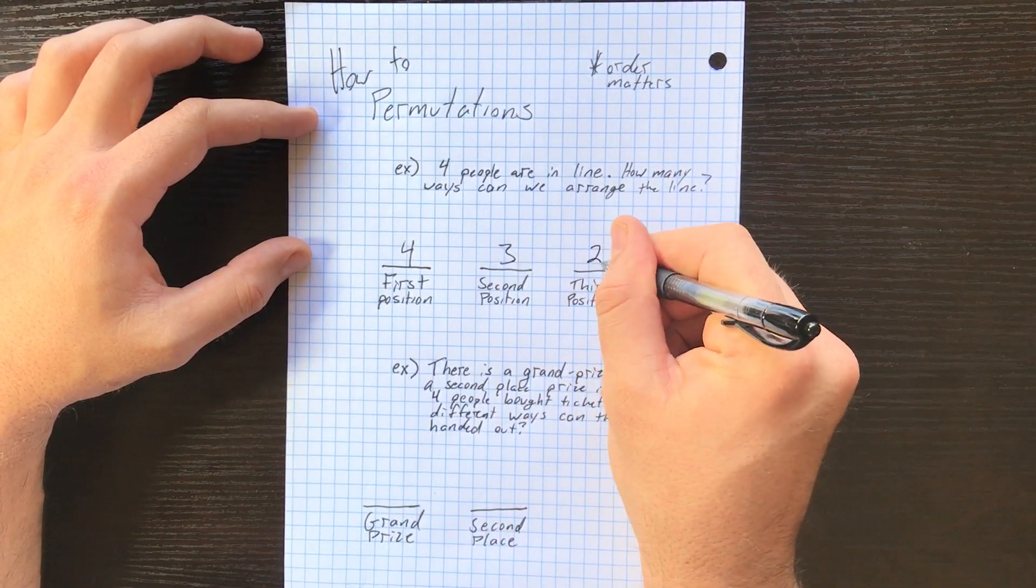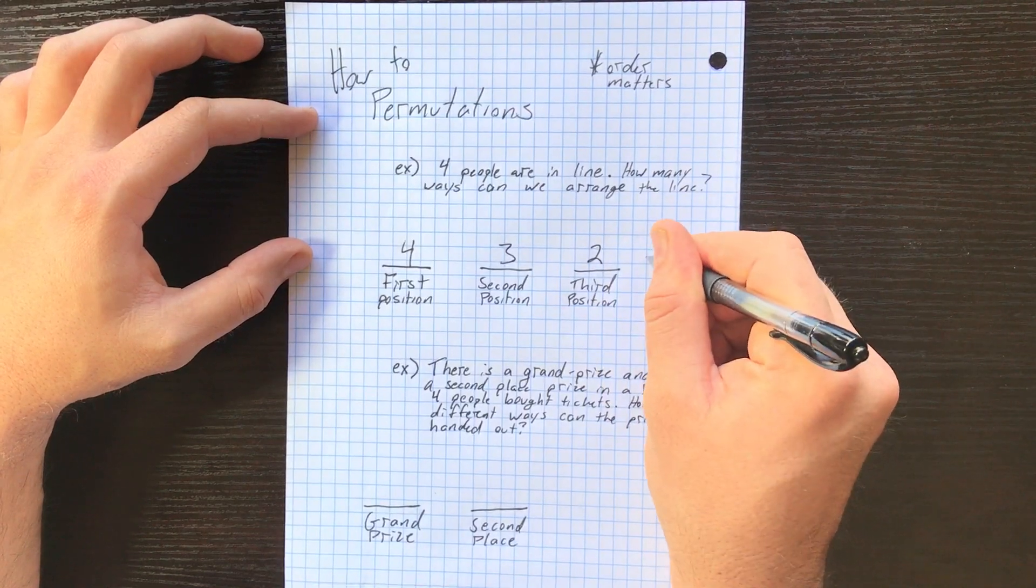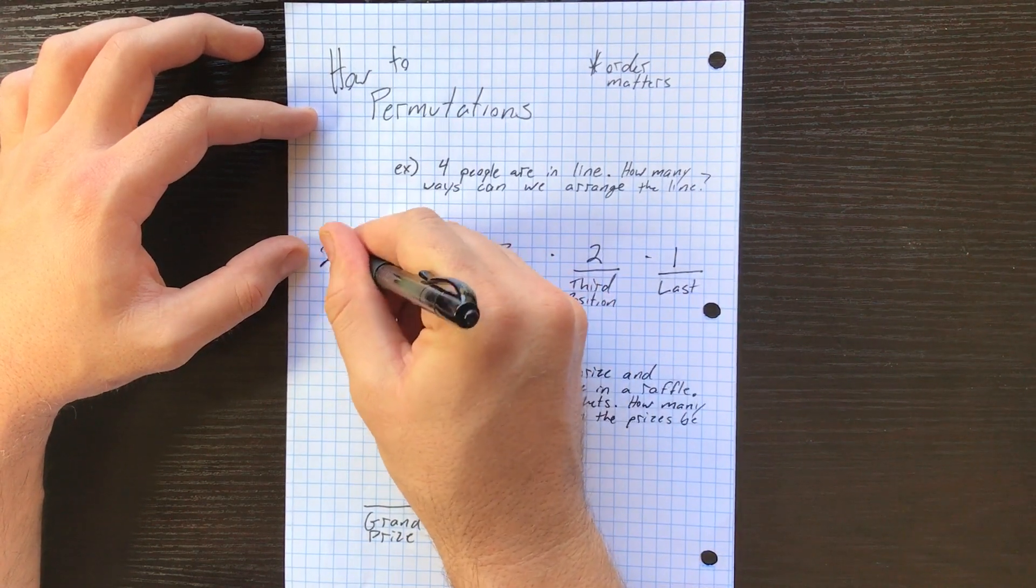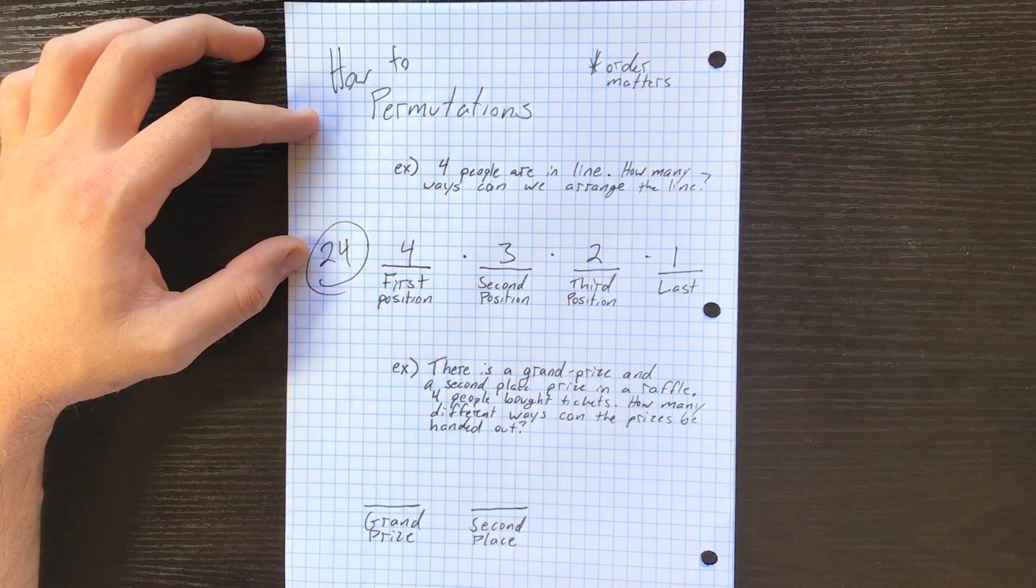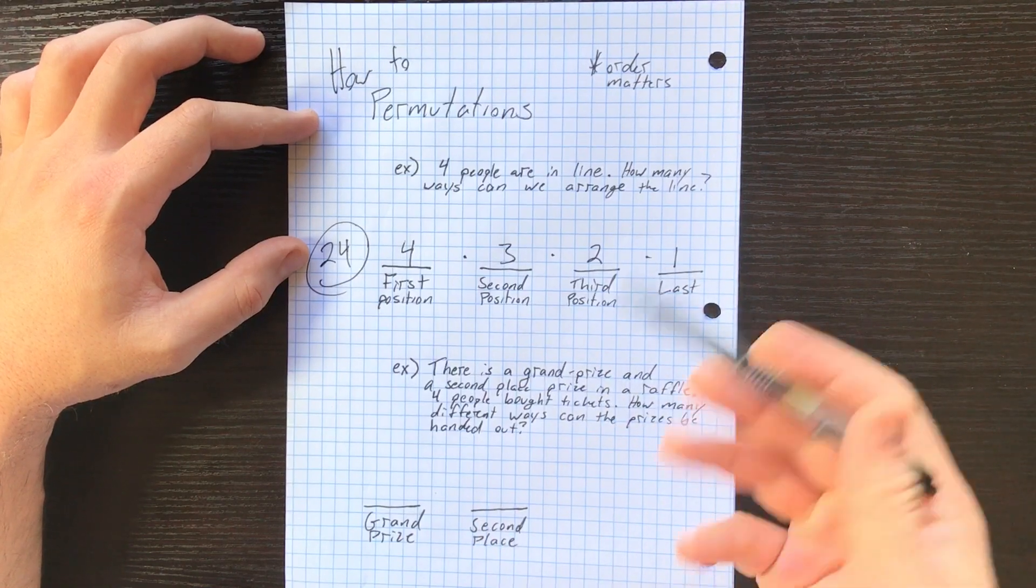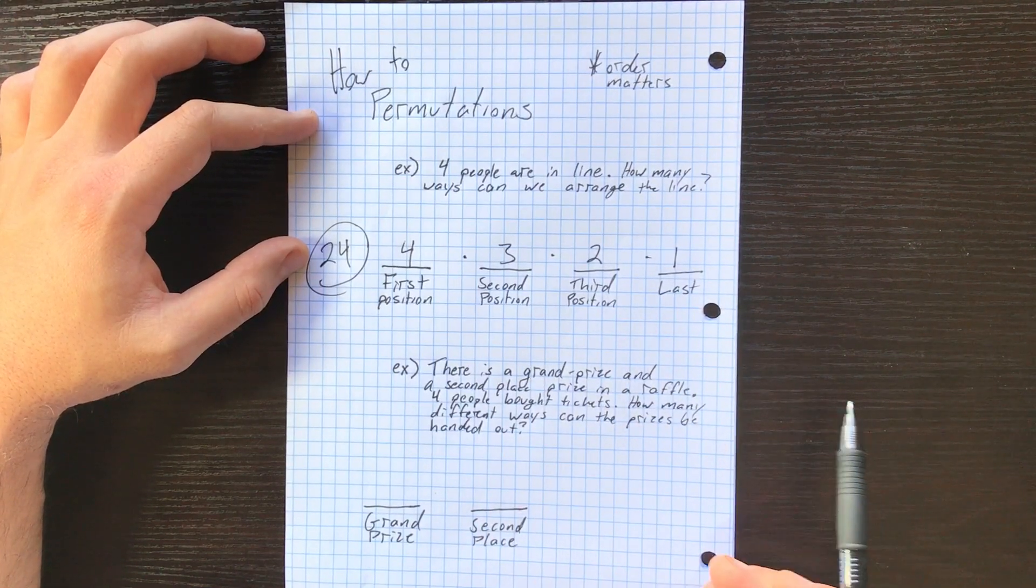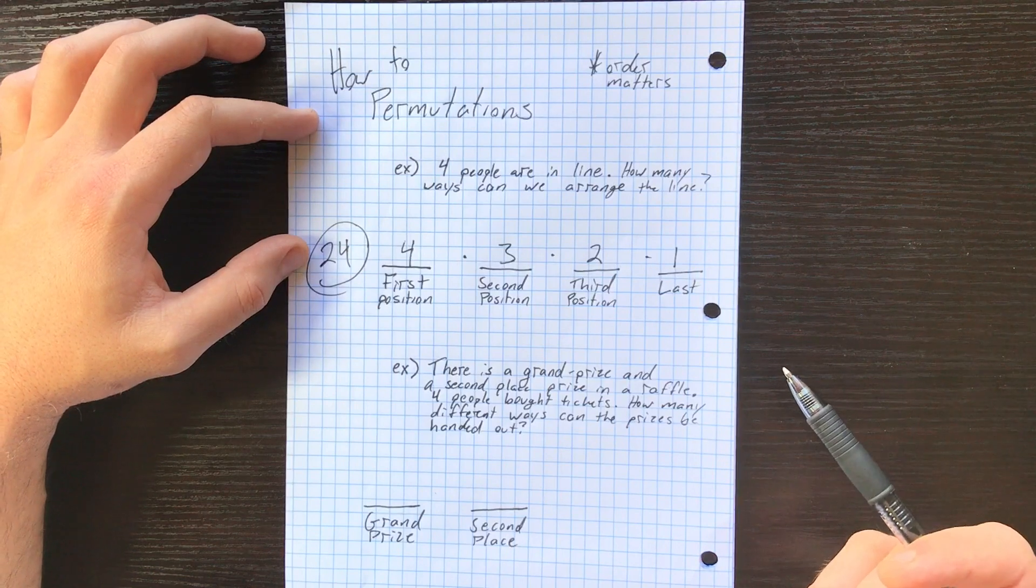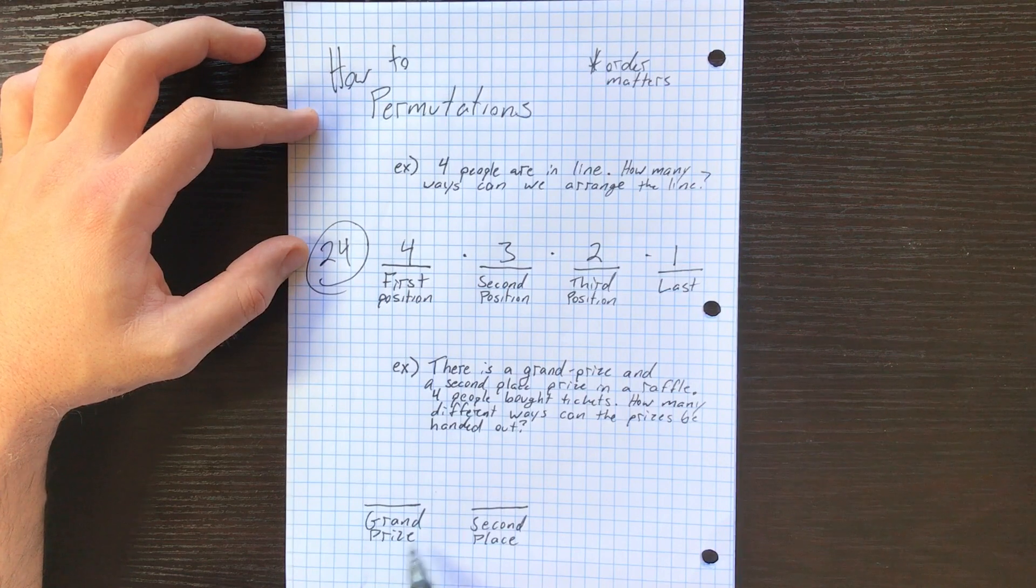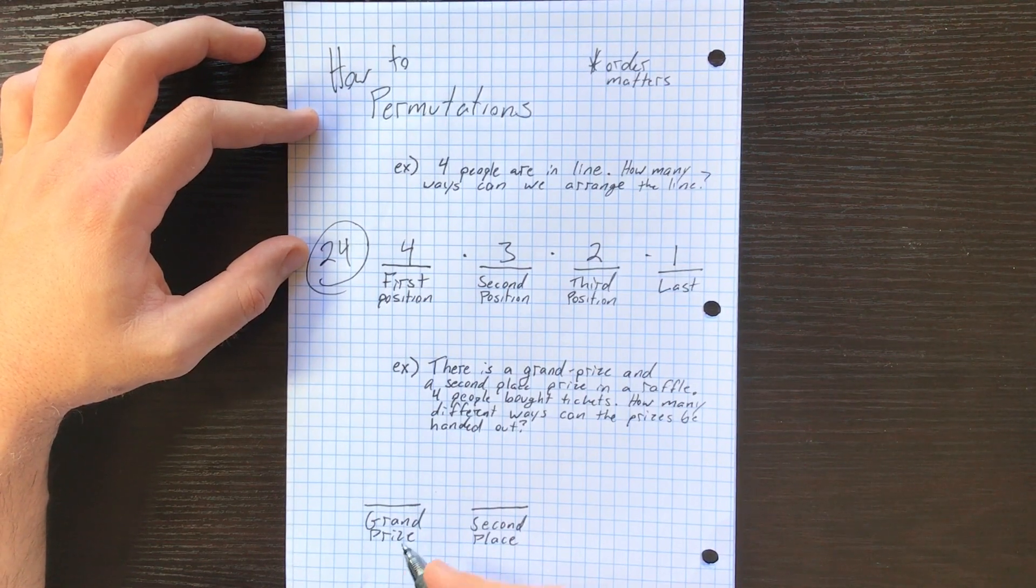To pick, and then two, and then one. We multiply these together: 4 × 3 × 2 × 1 = 24. That's our answer, 24, just by multiplying them together. Another permutation: there's a grand prize and a second place prize in a raffle. Four people bought tickets. How many different ways can the prizes be handed out?